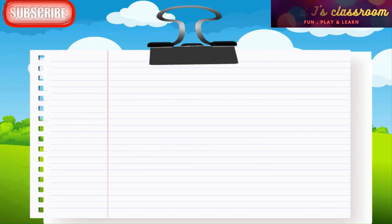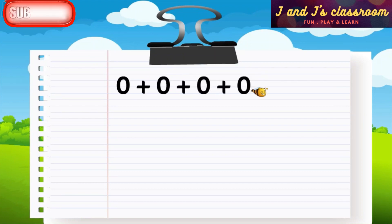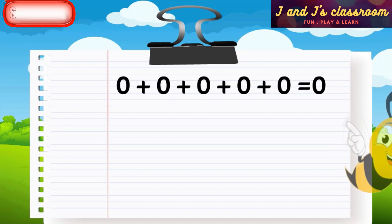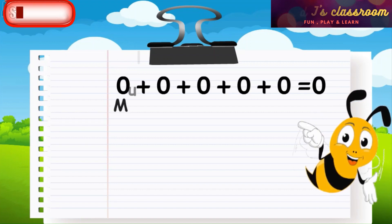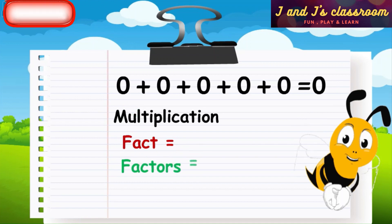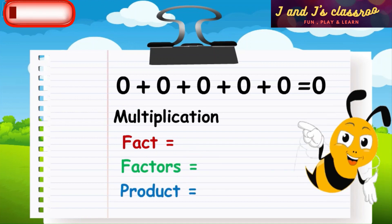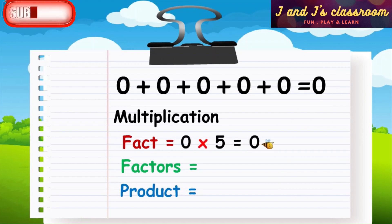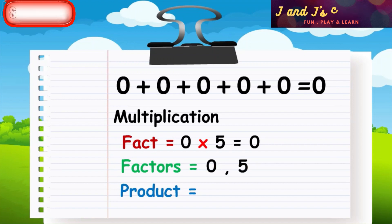Now listen to one more example. 0 plus 0 plus 0 plus 0 plus 0 plus 0 is equal to 0. Now let me write the multiplication fact, factors, and product. 0 is added 5 times, so 0 cross 5 is equal to 0. Here, factors are 0 and 5, and the product is 0.